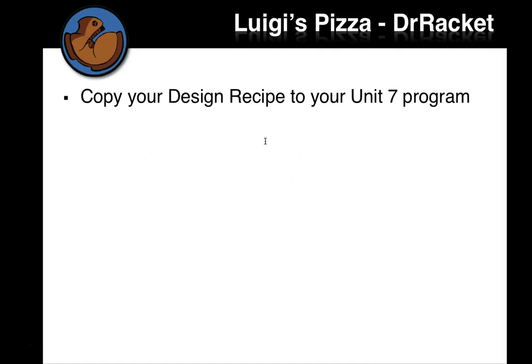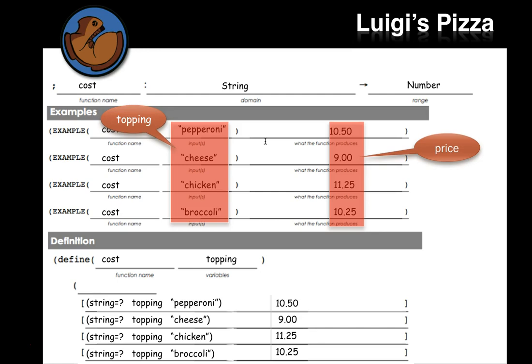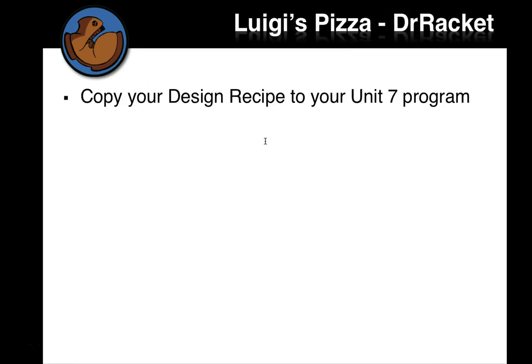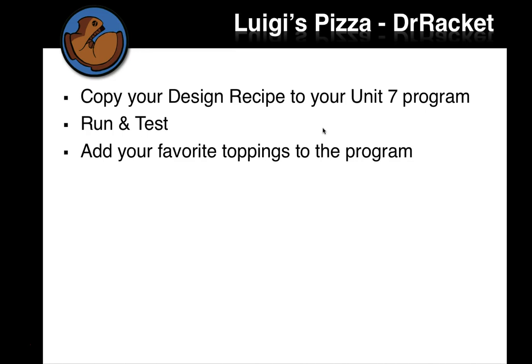So now go back to your workbook. And copy that design over. And then make sure it executes. Including, let's see, we had examples, right? Yep. We got examples. So put in your examples, put in this definition right here, put all that into your unit seven program, save it and check it. If you have any trouble, come get me. Run it and test it. And then go ahead and add a couple of additional toppings. And write tests for those. So whatever toppings you like, go ahead and add those to the program. And give them a fake amount. You can make it so it's cheaper. You can make it so that yours is super expensive. However you want to do.